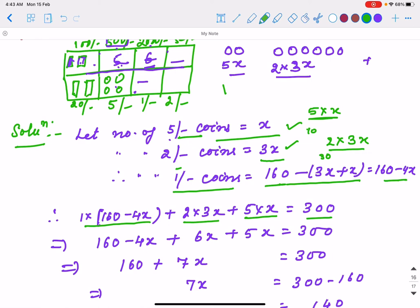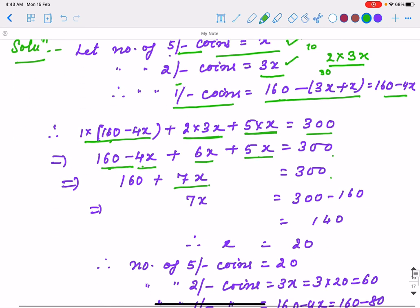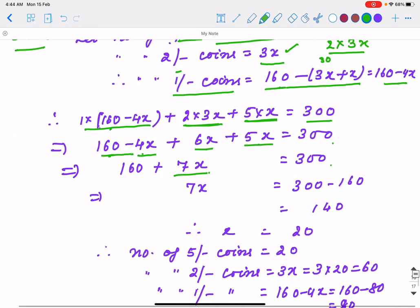Now we only need to simplify. 1 times everything stays the same: 160 minus 4x. 2 times 3x is 6x. 5 times x is 5x, and the total is 300. Adding: 5 plus 6 minus 4 is 7x. So 160 plus 7x equals 300. Subtract 160: 7x equals 140. Therefore x equals 20.